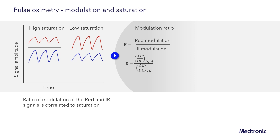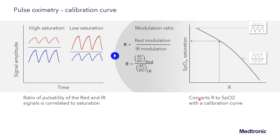That brings us to the last factor: a calibration curve can be used to calculate SpO2. The modulation ratio — the AC/DC of red divided by the AC/DC of infrared, or red percent modulation over infrared percent modulation — trends with saturation. At high saturations it is a small number, and at low saturations it is a large number. A calibration curve takes a specific modulation ratio R and converts it to a saturation or SpO2, and is typically empirically derived for that pulse oximetry setup.